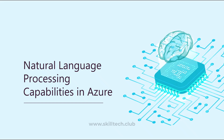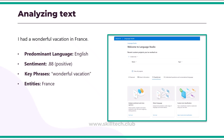Next we are going to talk about natural language processing capabilities available in Azure. Azure AI Language Service provides pre-trained and customizable deep learning models to analyze text. These models use tokens and embeddings to turn words into numerical representations. Deep learning models perform calculations on these numerical representations to provide responses written in natural language.